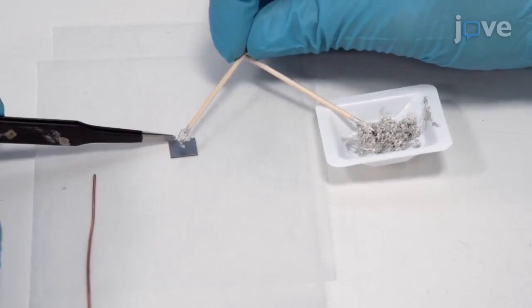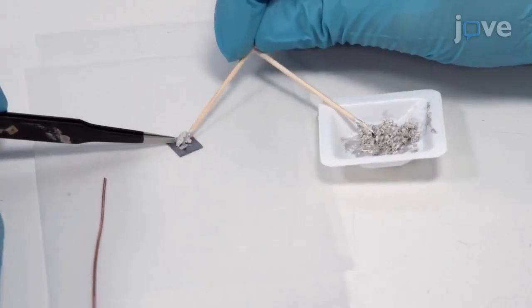To begin, apply silver paste to attach the ohmic contact to a thin-plated copper wire.